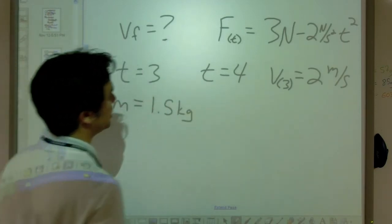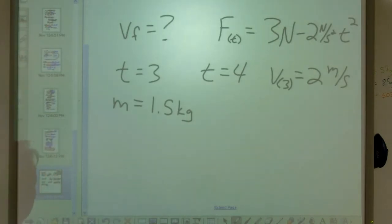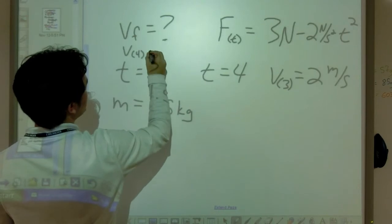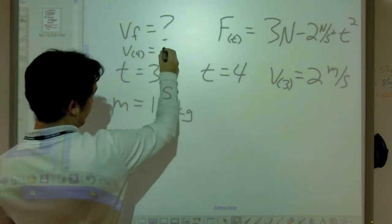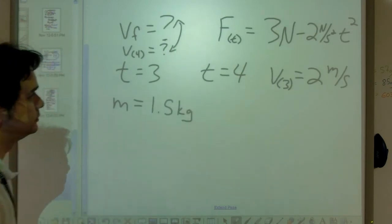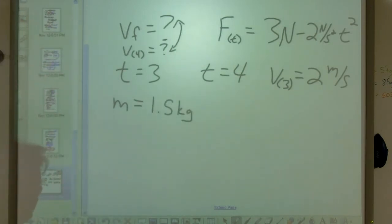The mass of my object is equal to one point five kilograms. That might be useful information. And the final thing that I want is the final velocity, which is the same thing as the velocity at t equals four. All right, so let's get started.